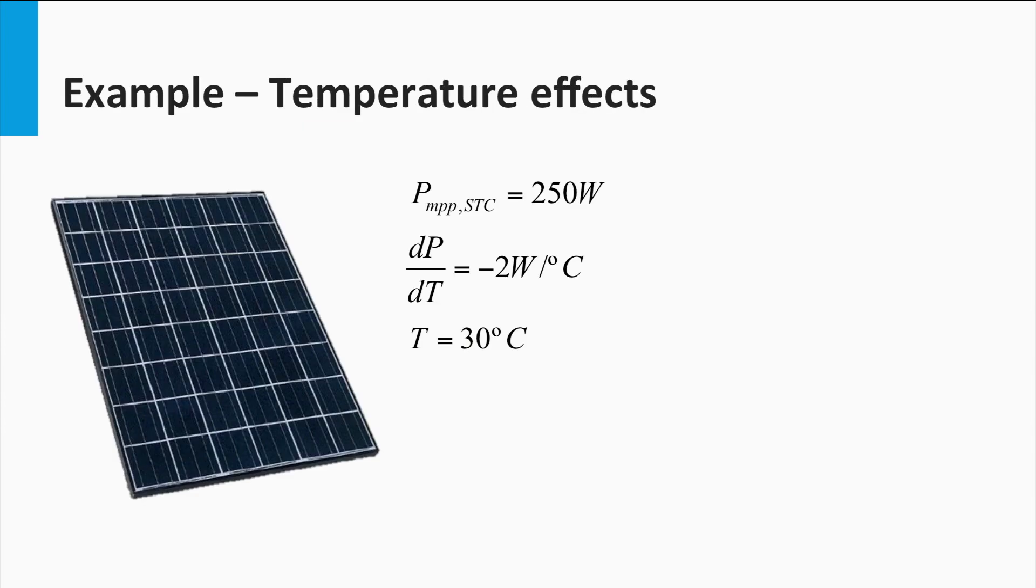Let's take a look at an example. If the maximum power output of a PV module under standard test conditions is 250 watts, and the temperature coefficient of power is minus 2 watts per degree Celsius, then the module's power output at a temperature of 30 degrees Celsius can be calculated as follows. The power is 250 watts plus minus 2 watts per degree multiplied by the temperature difference 30 minus 25 degrees Celsius, which gives you 240 watts.